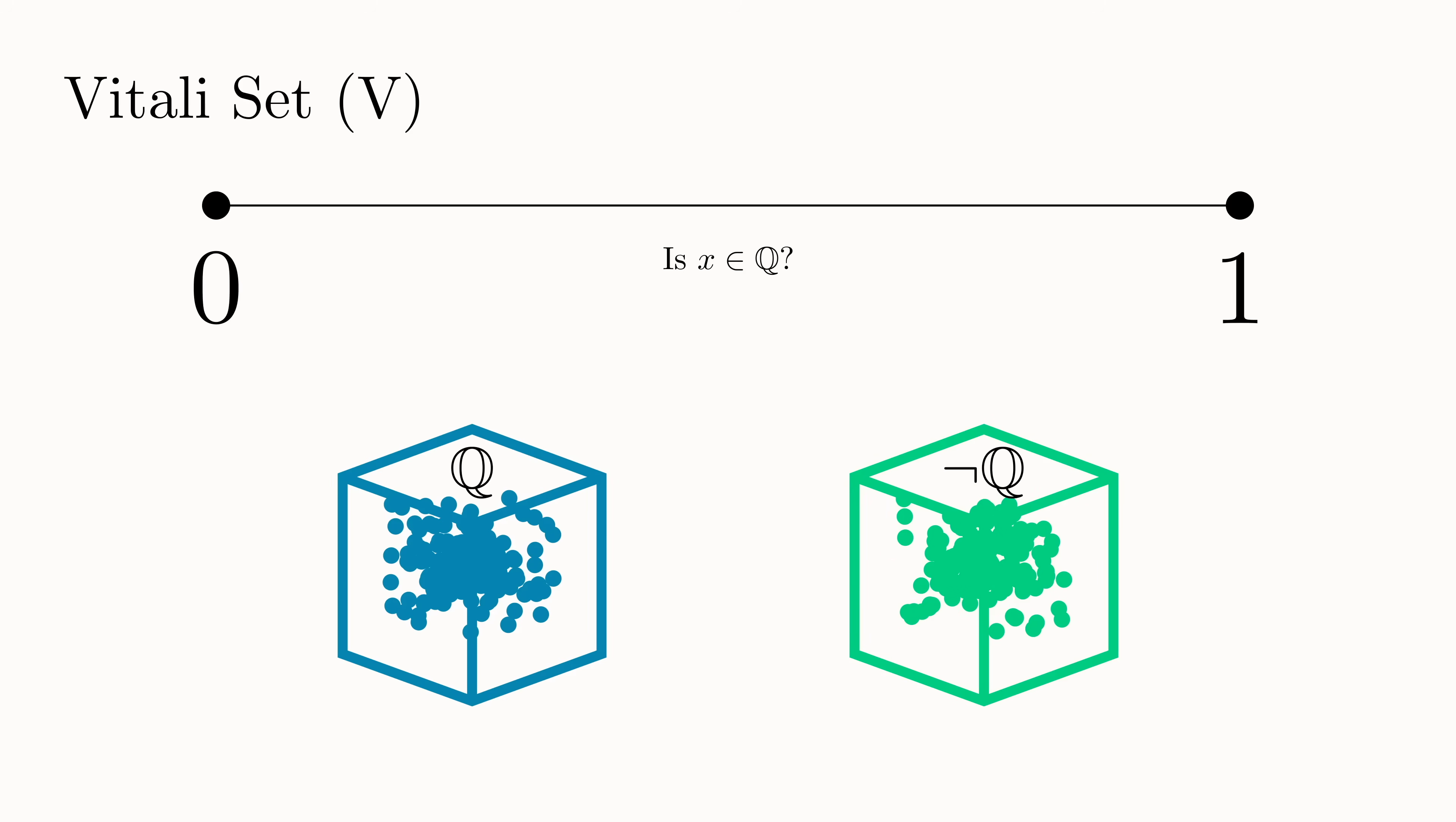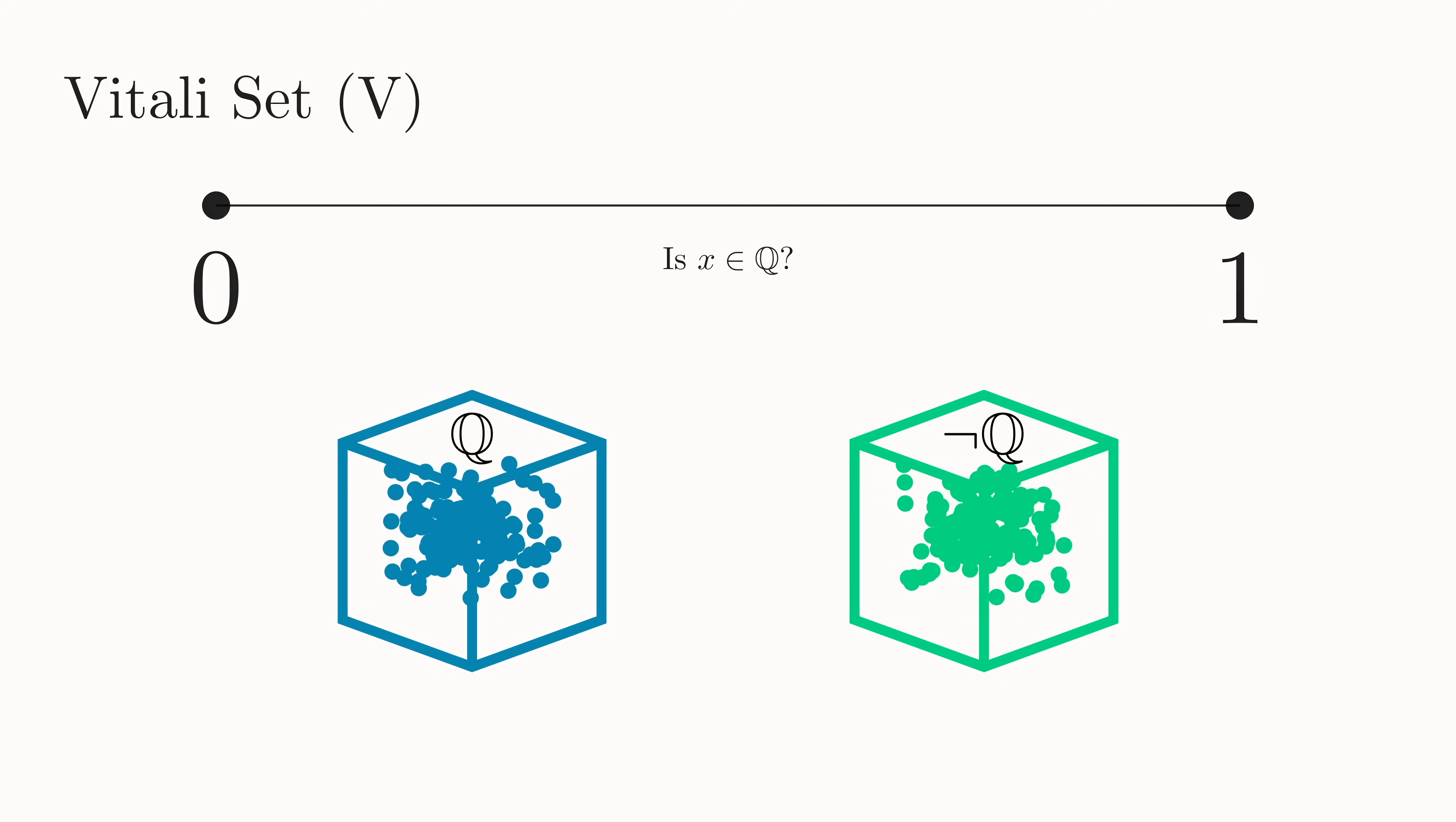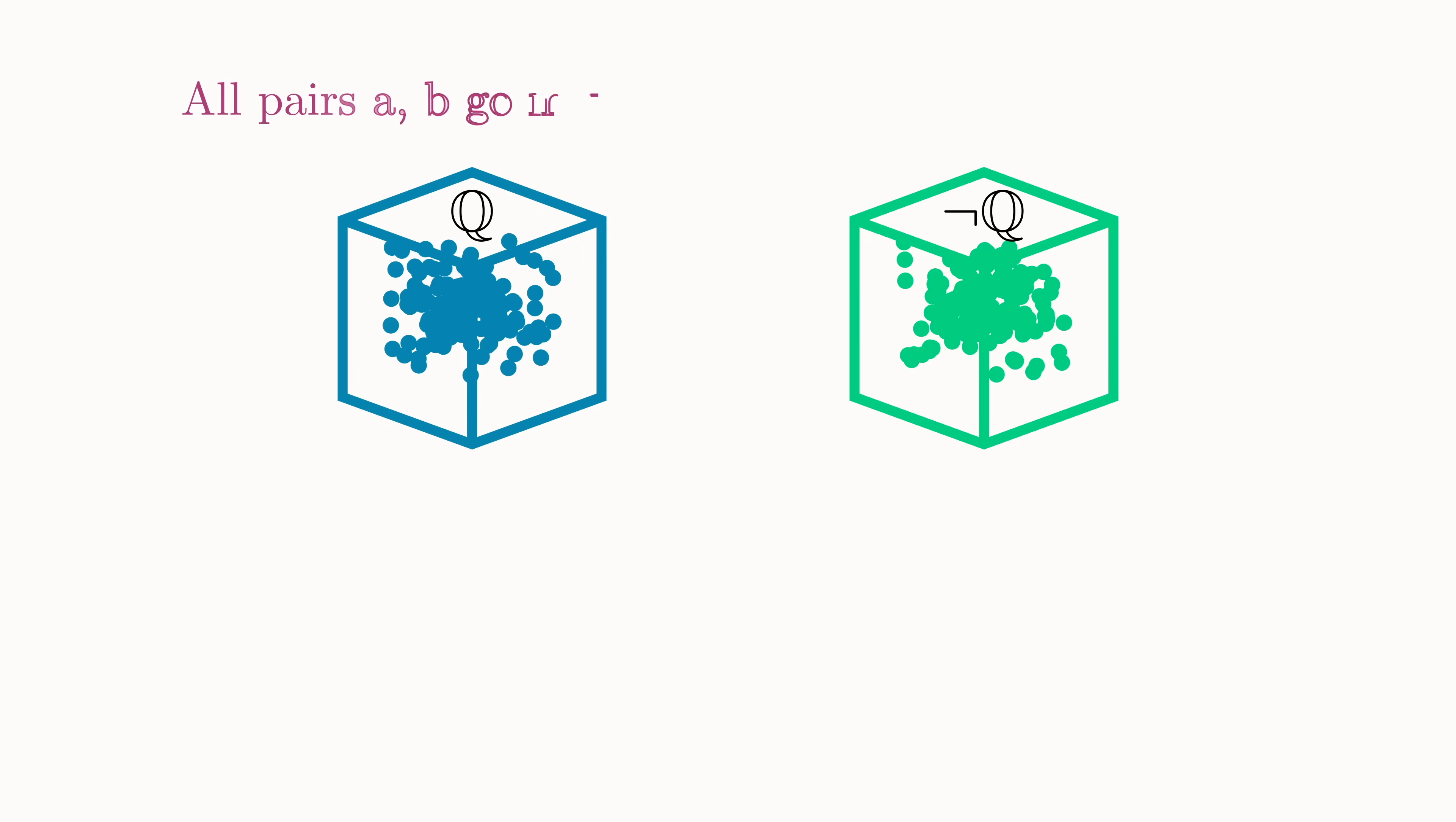Next, we consider all possible pairs of numbers in each box, and then check whether the difference between them is rational or not. If the difference is rational, then they will stay in the same box. If the difference is irrational, then they are separated into different boxes. For the blue box, any two numbers you pick will both be rational. And by subtracting one rational from another, you will always just get another rational. So all the numbers in the blue box stay put. That's easy enough.